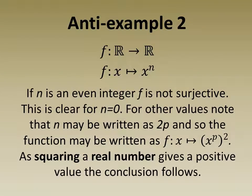For the second anti-example, consider the function f from the real numbers into the real numbers. If the value of f at x is x^n and n is an even integer, then f is not surjective. This is clear for n = 0.